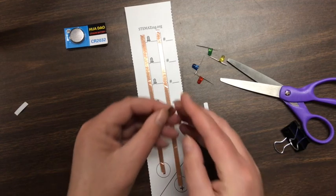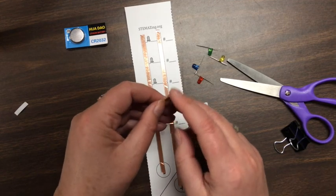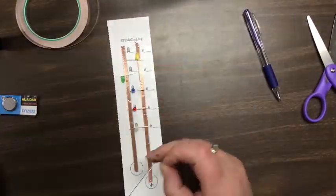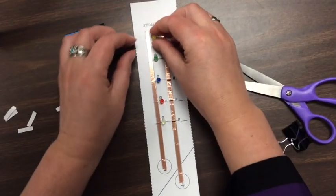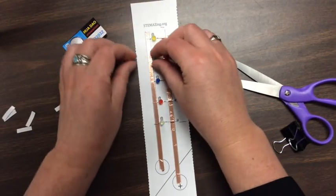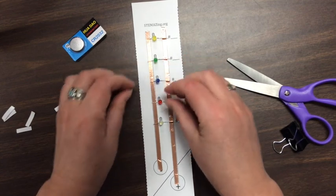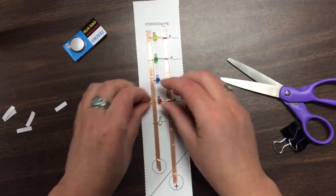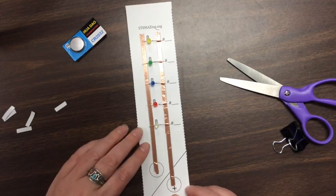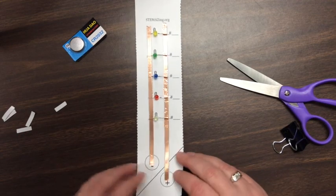And now we just need to repeat that with the rest of our LEDs. And again, you might just need to go back through and make sure that the negative leads are up off of the copper tape that's on the left side for the negative lead to our circuit, so that they won't be on when we put our battery in place.